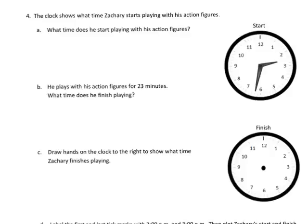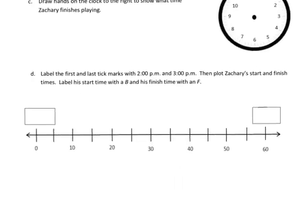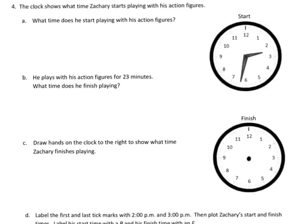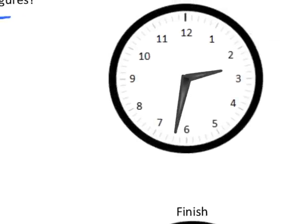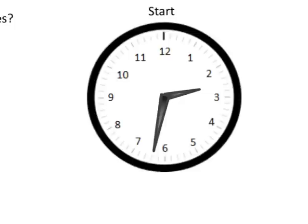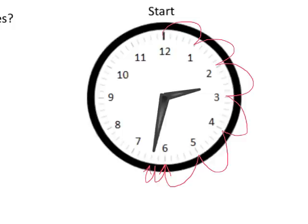Moving to our last slide — the idea of this slide is to connect the concept of analog clocks with a number line, and we're beginning the process of problem solving with elapsed time. The first question says, what time does he start playing with his action figures? We can see the clock — it's between 2 and 3, so we know it's 2 o'clock plus some minutes. Students are going to know that the 6 is our 30, so that's 30 plus 2 extra minutes, which is 32 extra minutes.